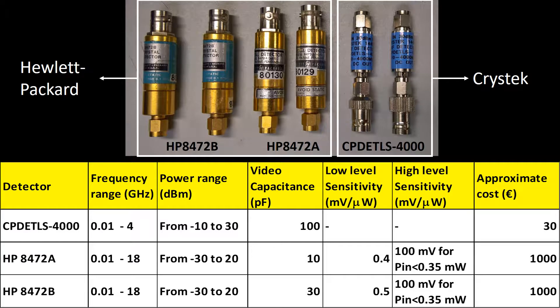We have several Schottky diode detectors in our lab. Here we can see two samples of three different models. The Crystek detector works at frequencies up to 4 GHz and they are qualified to detect powers between minus 10 and 30 dBm. 30 dBm is just one watt of power. This is quite high for a radiofrequency signal. Therefore, these devices are optimized for high power applications. They are fairly affordable with a cost of around 30 euros.